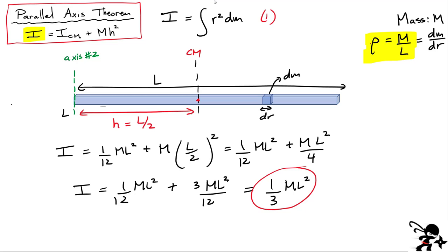Why would you care about this? It's much easier because textbooks usually include a table listing the moment of inertia of various objects — spheres, rings, shells — and they typically only list the value through the center of mass. Using the parallel axis theorem, if you have any axis parallel to the center-of-mass axis, you can easily calculate the moment of inertia through that new axis. Let's do one last example to practice.